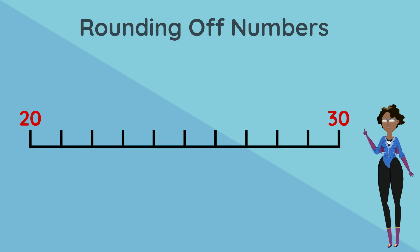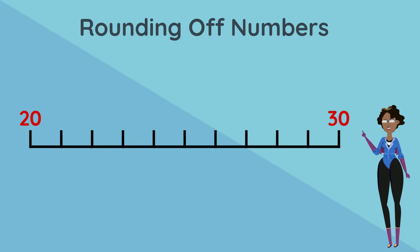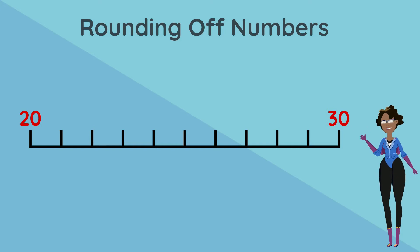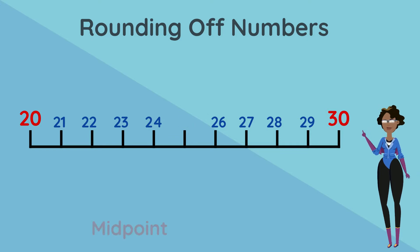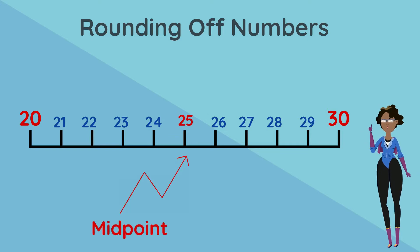To figure out if we need to round up to 30 or round down to 20, we need to see if the number is on the midpoint, above the midpoint, or below the midpoint. The midpoint is the middle number of the bandwidth numbers. In this case, that is 25.